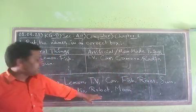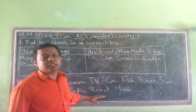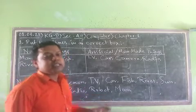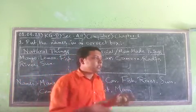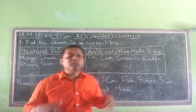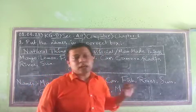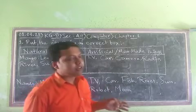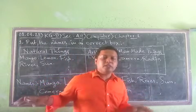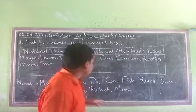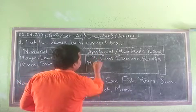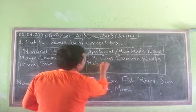Here comes robot. Robot is also a man-made thing. We can see many electrifying robots which can do many things as programmed. We can also see a toy robot in software. So robot is a man-made thing and we write robot in the man-made things box.